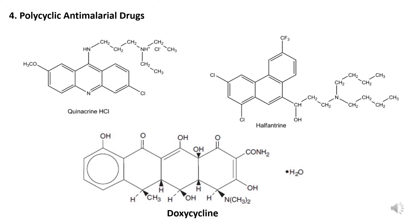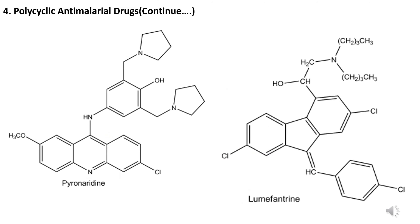The next category is polycyclic anti-malarial drugs. Examples are doxycycline, quinacrine hydrochloride, and halofantrine. Pyronaridine, acridine, and lumefantrine are also examples of polycyclic anti-malarial drugs. You can see their structures on screen.